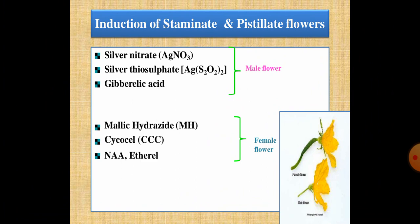Gibberellins promote maleness and are antagonistic to the action of ethylene and abscisic acid. When gibberellic acid is applied to the plant, it inhibits the production of ethylene and abscisic acid, resulting in fewer female flowers. In fact, the gynoecious line of cucumber is maintained by inducing male flowers by spraying GA3 at 1500 to 2000 ppm. Silver nitrate at 300 to 400 ppm also induces maleness.